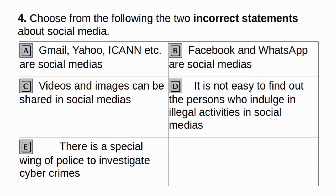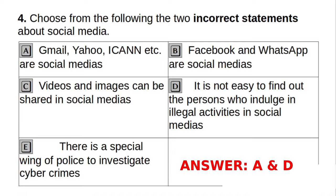Choose from the following two incorrect statements about social media. A. Gmail, Yahoo, ICANN etc. are social medias. B. Facebook and WhatsApp are social medias. C. Videos and images can be shared in social medias. D. It is not easy to find out the persons who indulge in illegal activities in social medias. E. There is a special wing of police to investigate cyber crimes. Answer: A and D.